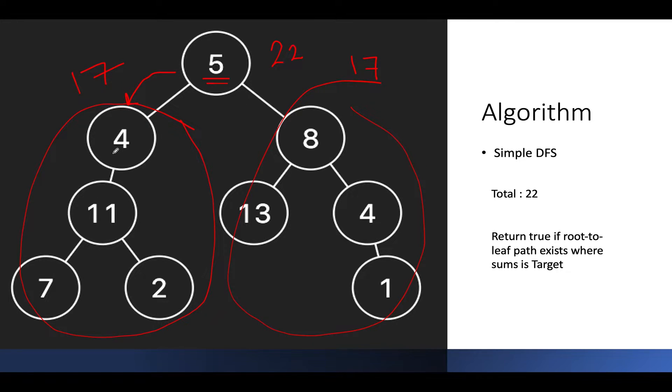17 minus 4, what does it lead to? It leads to 13. So the target for the left subtree, which is this subtree, becomes 13, and since the right subtree of 4 is null, we will not do any invocation over here.